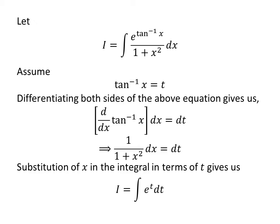Let us substitute arctangent of x by t and 1 upon 1 plus square of x times differential of x by differential of t. So, i is equal to integral of exponential of t with respect to t.